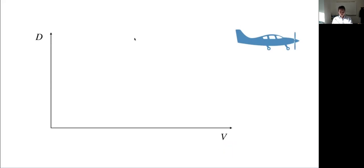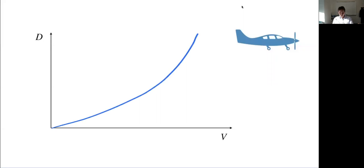First, let's think conceptually about what the drag looks like for an airplane as a function of speed. I'd encourage you to pause and try to sketch that yourself. Most commonly students will sketch something showing drag increasing with speed. This is indeed correct for a car or a train, and it makes sense — it's quadratic. If you've ever put your hand out of a moving vehicle you can feel that resistance grow pretty quickly with increased speed.